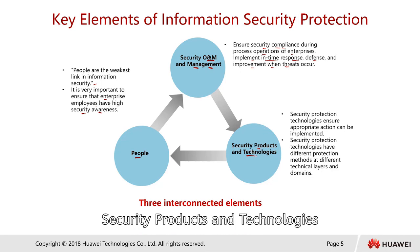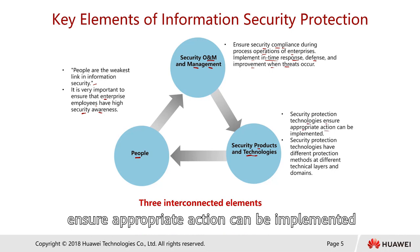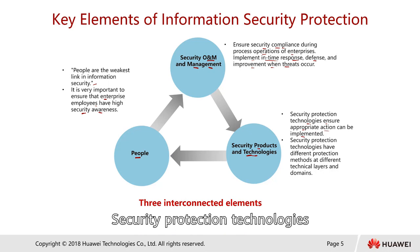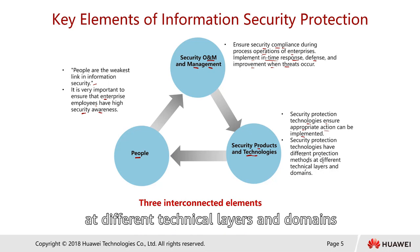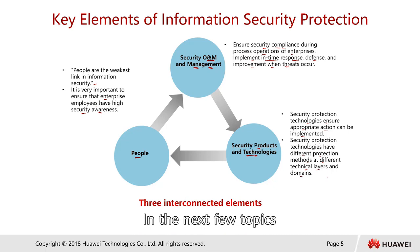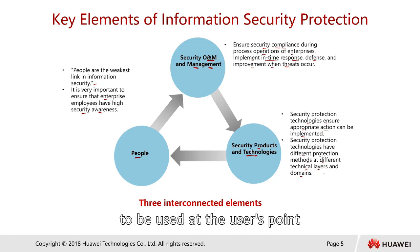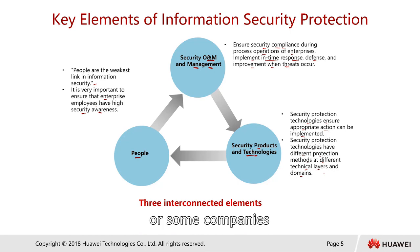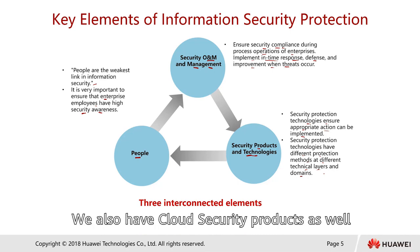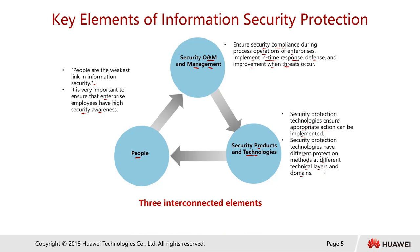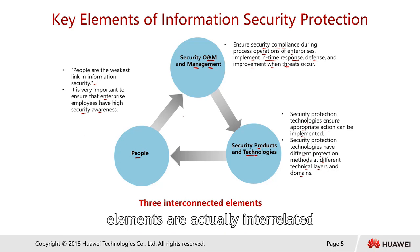The final element is security products and technologies. Security protection technologies ensure that appropriate actions can be implemented, with different protection methods at different technical layers and domains. From the user point of view, there are technologies used at the user layer. At the gateway or edge layer of the company, we have solutions like firewalls, and some companies subscribe to cloud services. We also have cloud security products. All these elements are interrelated.